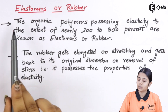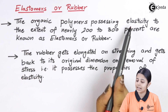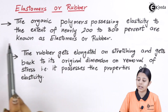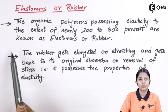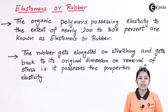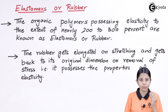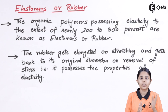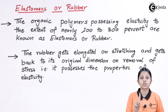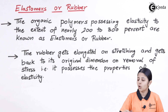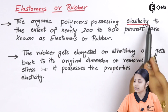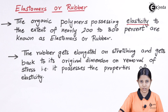Elastomers or rubbers are organic polymers possessing elasticity to the extent of nearly 200-300%. They are such materials which are different from our normal materials. This is because of one property — the property of elasticity — which makes the entire difference.